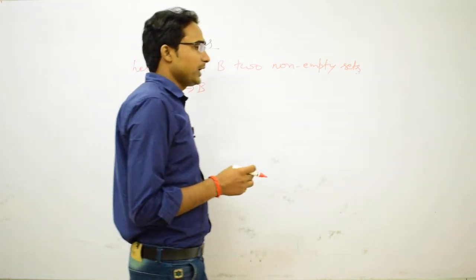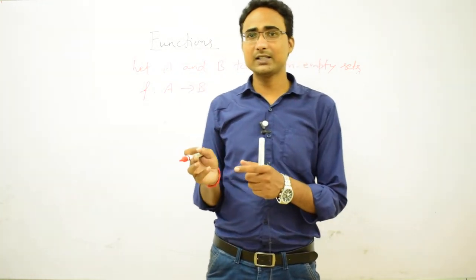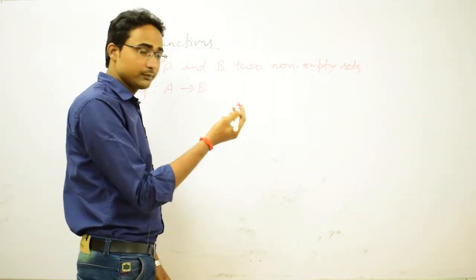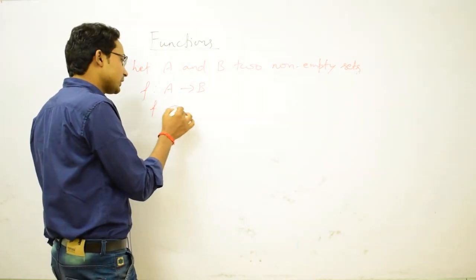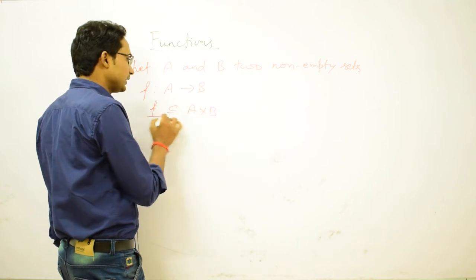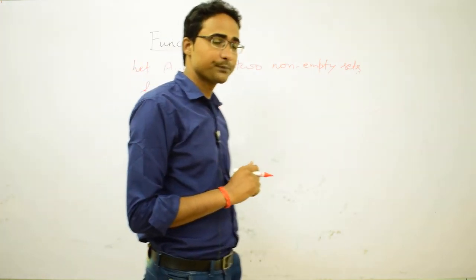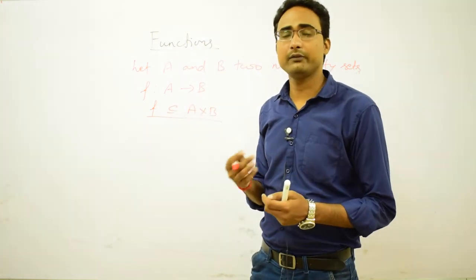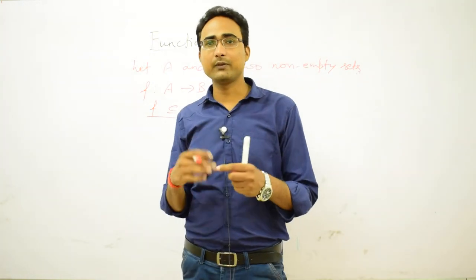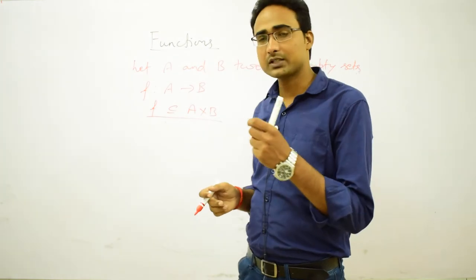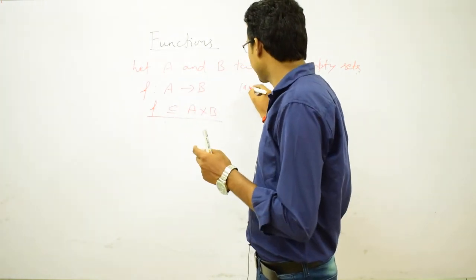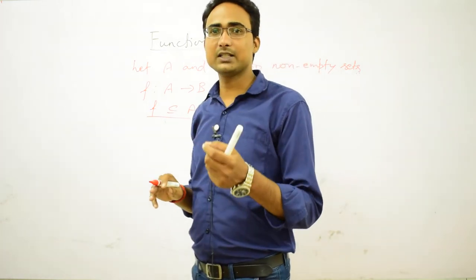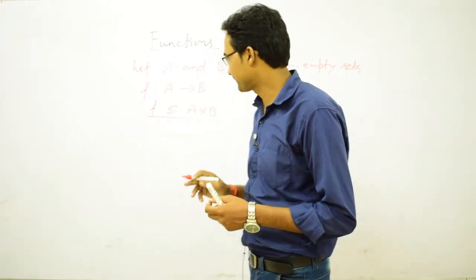Function from A to B means: for function we need two non-empty sets A and B. The condition is that function should be a subset of A cross B — this is a very important condition. In A cross B, you get ordered pairs, because in the Cartesian product when you multiply two sets you get ordered pairs. So function is basically a specific case of relation.